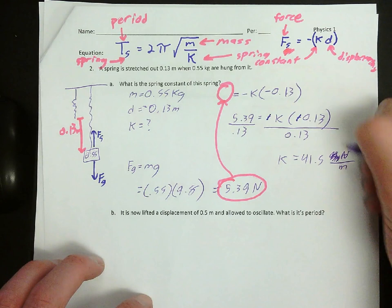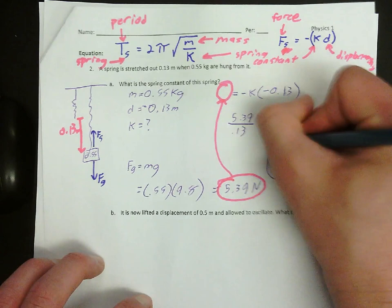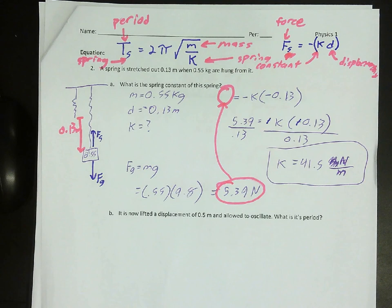And that gives me 41.5 Newtons per meter. And there you go. There's how you do the first part. So basic setup. Set up the equation. Find K. To do that, you'll have to find the force of gravity acting on it first. And then that should give you enough of what you need.